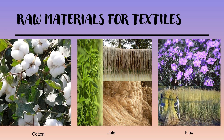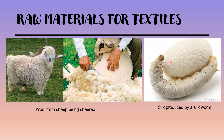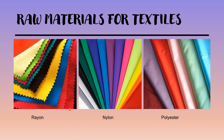They can be obtained from animals and insects, like wool from sheep and silk from silkworms. There are also several different types of synthetic fibers such as rayon, nylon and polyester, which have become increasingly popular along with the natural fibers.